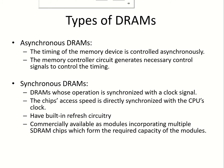Let us take a look at the different types of dynamic RAM cells that are available. First are the asynchronous DRAMs. Here the timing of the memory device is controlled asynchronously — that means there is no clock driving the operations, and the memory controller circuit will generate the required control signals to control the timing.